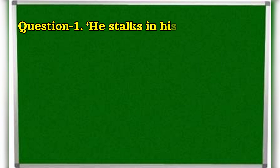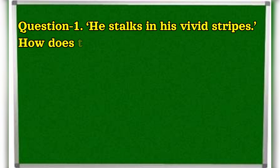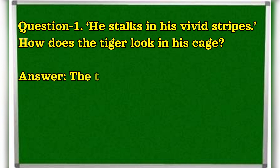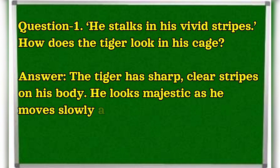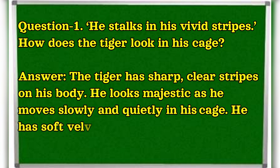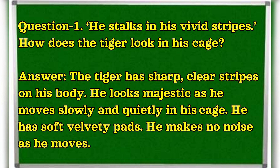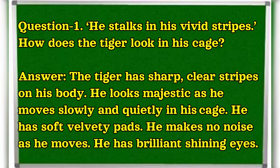Question 1. He stalks in his vivid stripes. How does the tiger look in his cage? The tiger has sharp, clear stripes on his body. He looks majestic as he moves slowly and quietly in his cage. He has soft velvety pads. He makes no noise as he moves. He has brilliant shining eyes.